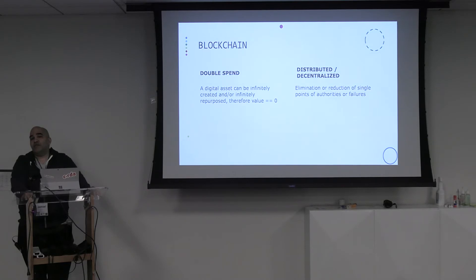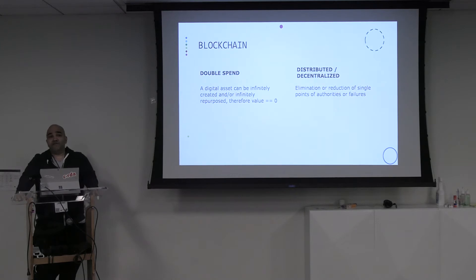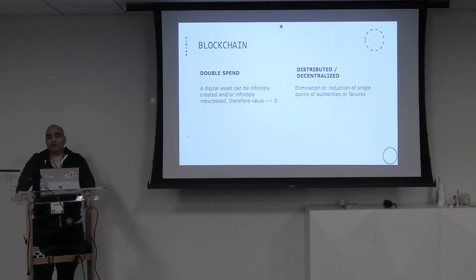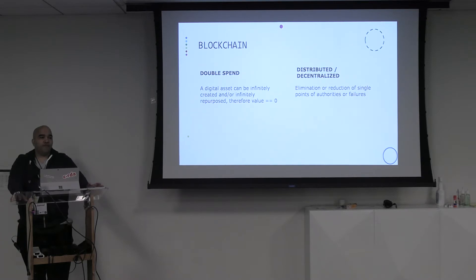Double spend is the idea that if I have a digital asset — let's say a PDF of a book — and I send you that PDF, if you value that PDF at zero, then I am potentially infinitely rich because I can keep repurposing it. So if that digital asset has a value of zero, whoever has it is theoretically infinitely rich. Therefore digital assets effectively have a value of zero — I can send the same copy to multiple people or create millions of copies with a script. Blockchain solves that problem.